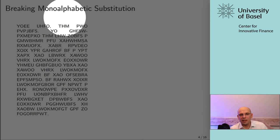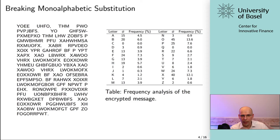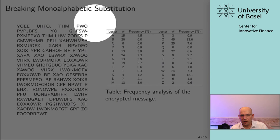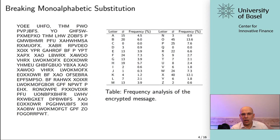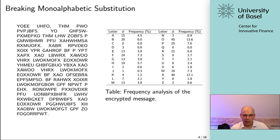The clever solution to break monoalphabetic substitution is to look at text frequencies. You look into the cipher text and count how many times each letter actually appears. For example, in a given text, A might appear 15 times — that would be a relative frequency of 4.5% — and you do that for every single letter you find in the text.